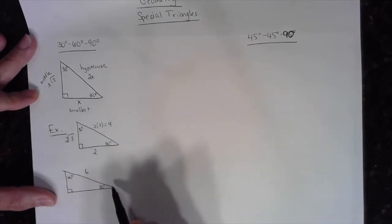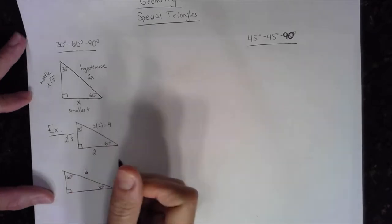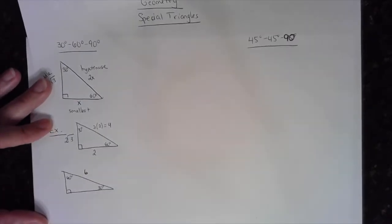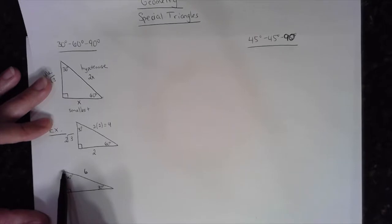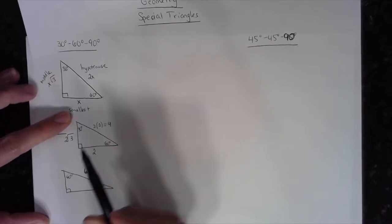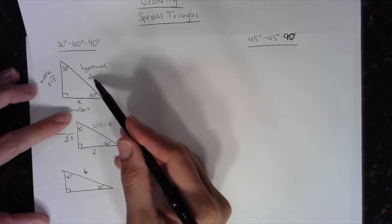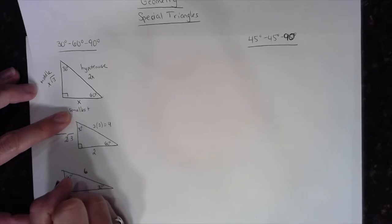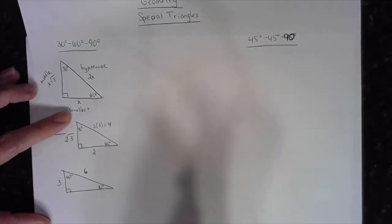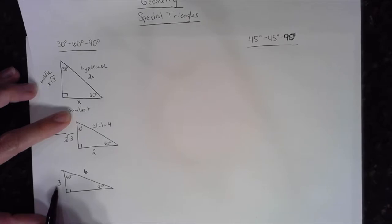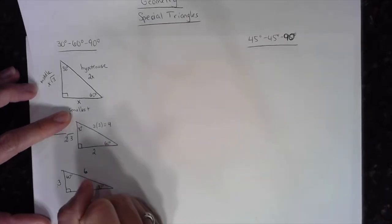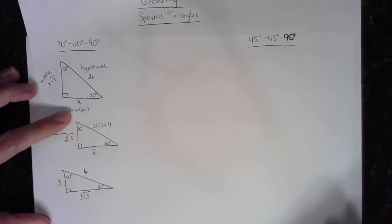When solving a 30-60-90 right triangle, you always look for the smallest side first. I know the side opposite the 30-degree angle is the smallest side, and in a 30-60-90 triangle the smallest side is half of the hypotenuse. So 6 divided by 2 gives me 3 — the smallest side is 3. The hypotenuse is twice the smallest side. Once I know the smallest side, I find the middle side: 3 times the square root of 3.